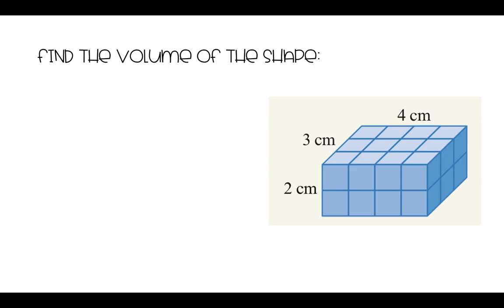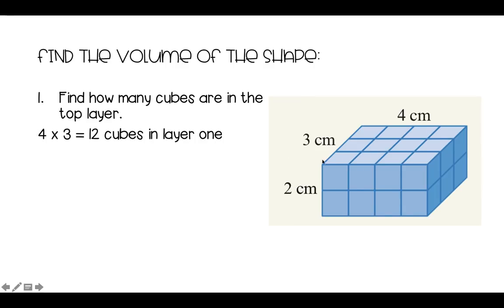So find the volume of the following shape. The first thing we can do is find how many cubes are in the top layer. So here we have 1, 2, 3 along this way, and 1, 2, 3, 4 along this way. So what we do is we go 4 times 3 equals 12.